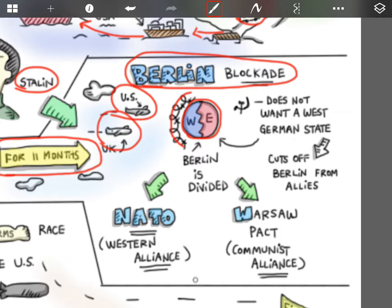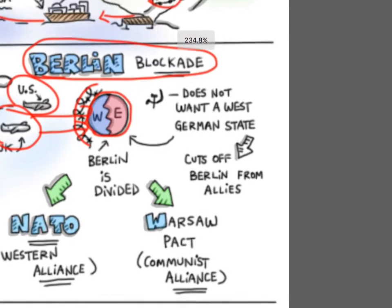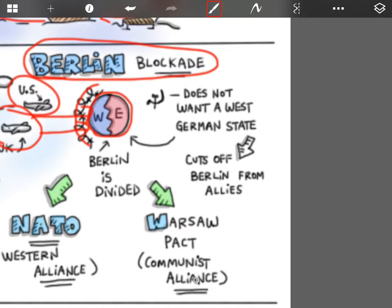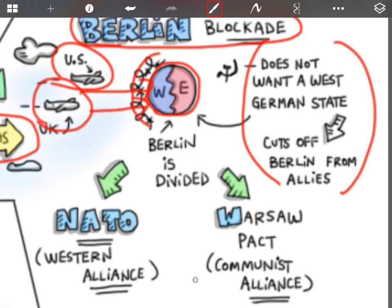The US and the UK decide that they don't like this and that they want to go into West Berlin. And so they have airdrops or airlifts into Western Berlin for those 11 months. We can see here the clearing off of the allies.